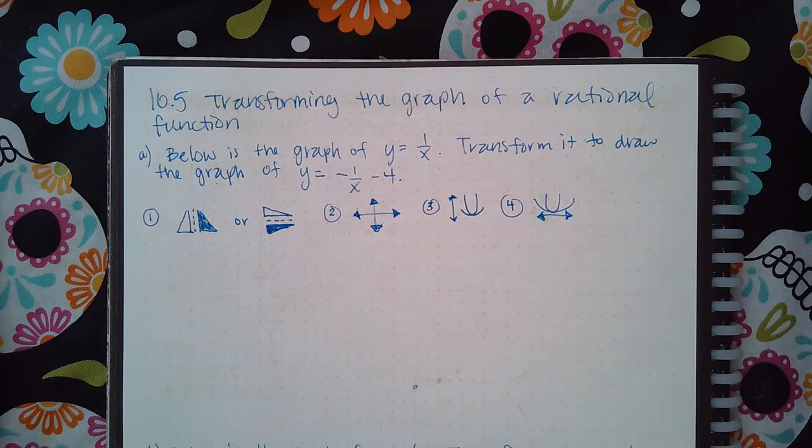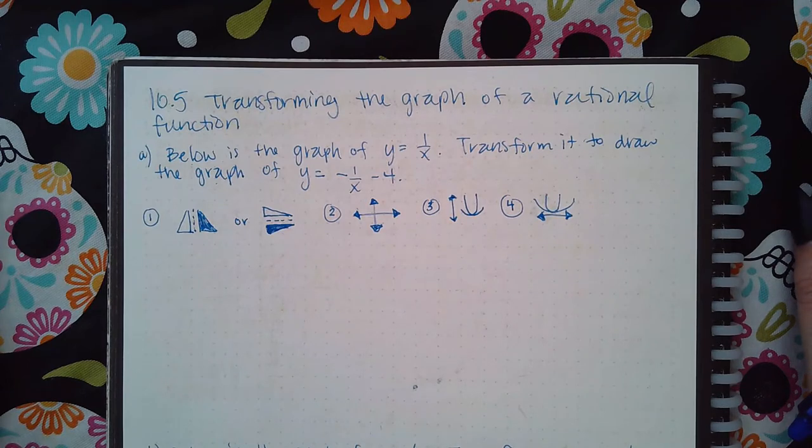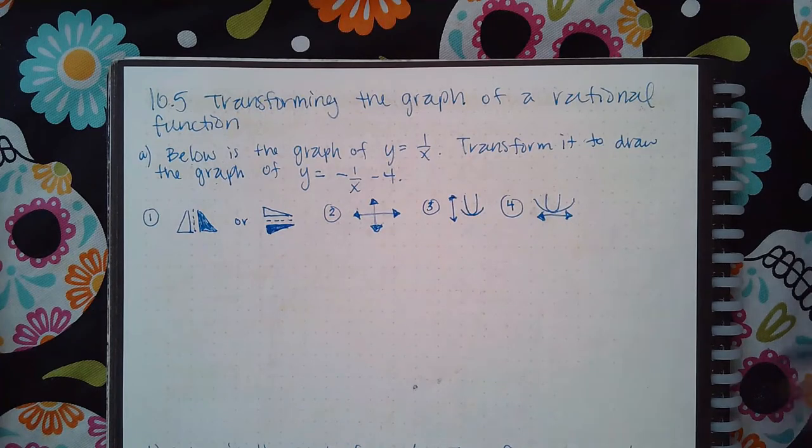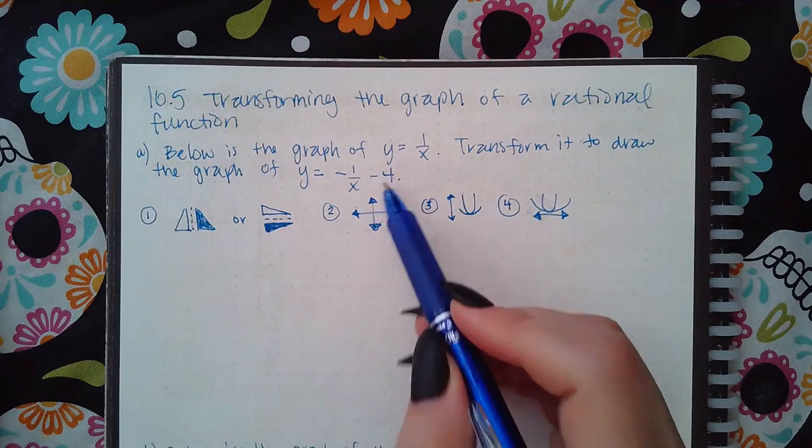Okay, so this is transforming the graph of a rational function. Below is the graph of y equals 1 over x. Transform it to draw the graph of y equals negative 1 over x minus 4.